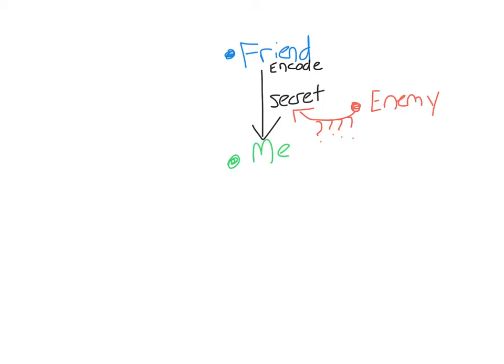I will have to have some sort of information that my enemy doesn't have. We call this information a key, or more specifically, a private key. To be able to send messages to lots of different computers, there's also a public key — a key that everyone has, but then there's also a key that only I have. You can think of it like a double-locked door: everyone has the key to the first keyhole, but only I have a key to the second keyhole.